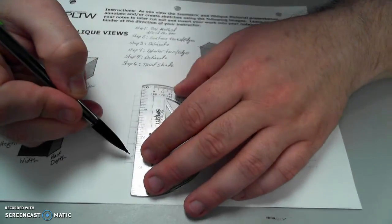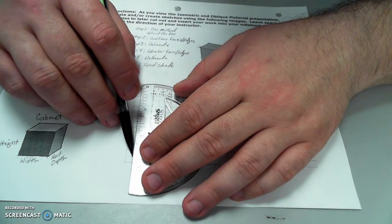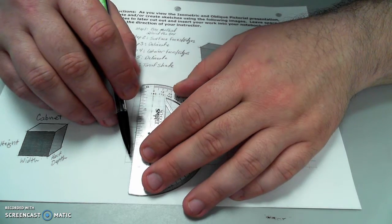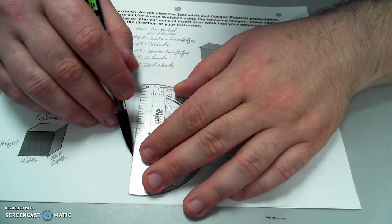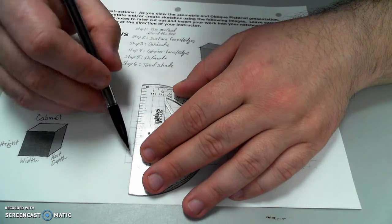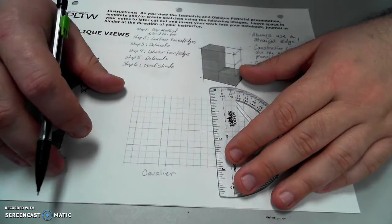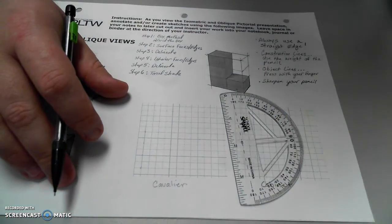I connect that together with a straight edge, hold my pencil nice and loose, so that I'm just using the weight of the pencil, and pull my entire arm, not just my fingers. I don't have a problem with going through the points either. It is, after all, just a construction line.